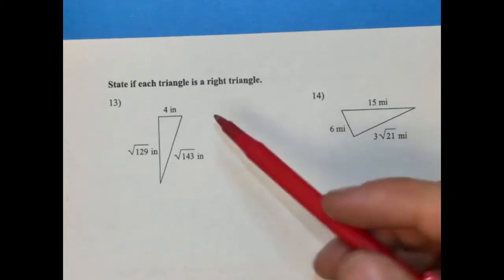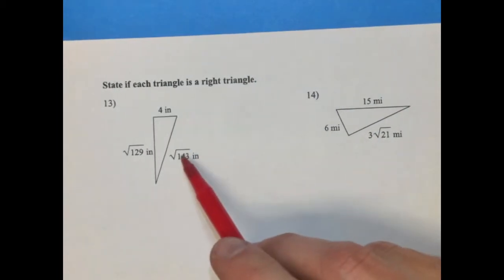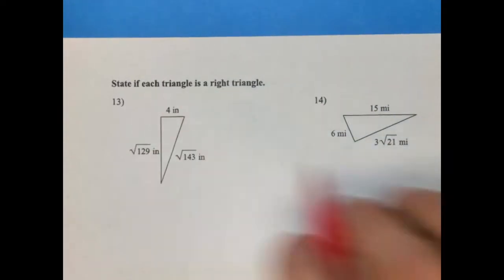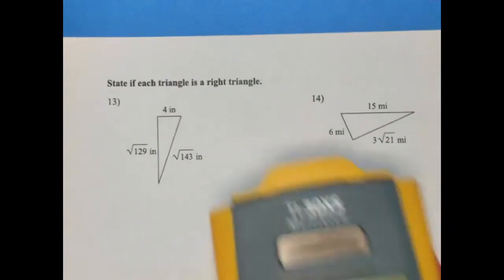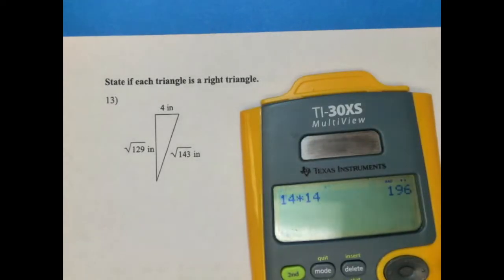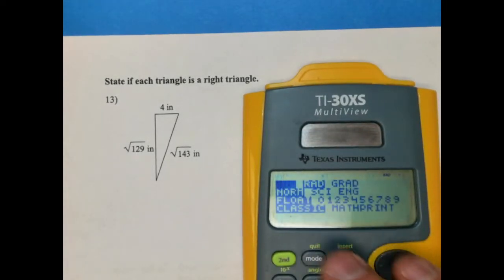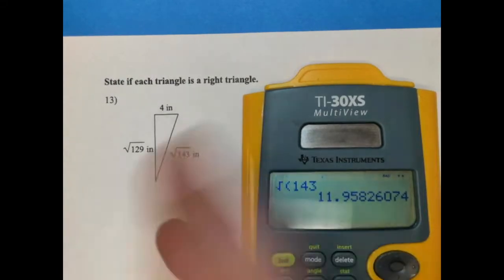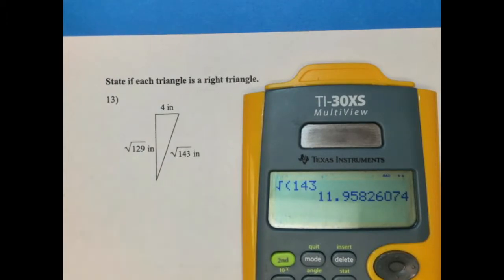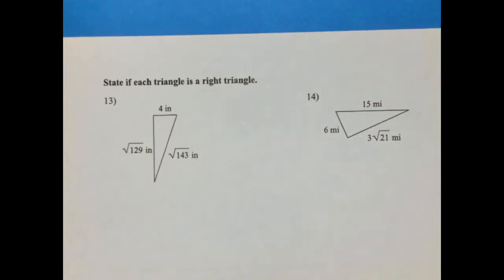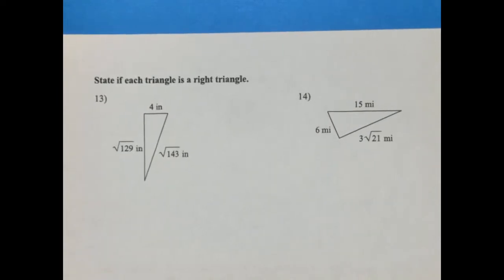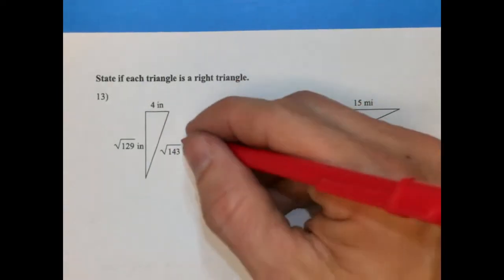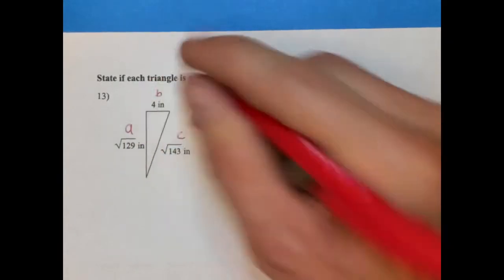It's asking us to state whether or not this triangle is a right triangle. So we have to identify the longest side before we assign A, B, and C. This is our longest side. And if you're not sure if it's the longest side or not, you can always use your calculator here to check this out. I want to make sure we are on classic mode. I can do square roots with the second button and this symbol here. Radical 143, and that's larger than 4, obviously. And this is going to be smaller than that because it's a smaller radical. So this is going to be our C.